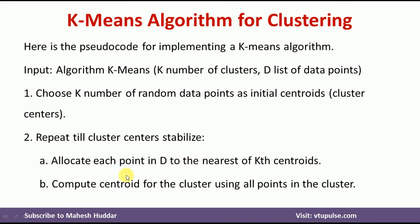Once we do that, we calculate the new centroid for the clusters using all the points in those clusters. Once we find the new centroid, we calculate again the distance between the data points and the new centroids. Depending on the distance, we allocate the points to the nearest Kth centroid. We then calculate the centroid for the new cluster points. This same step is repeated again and again until the cluster centers stabilize.